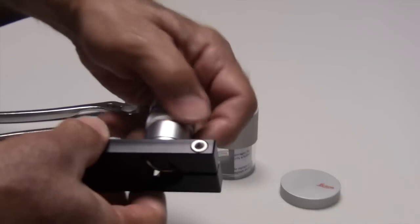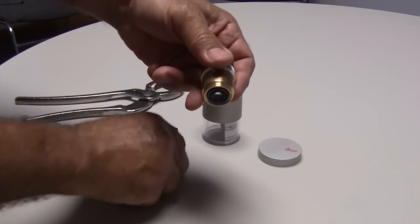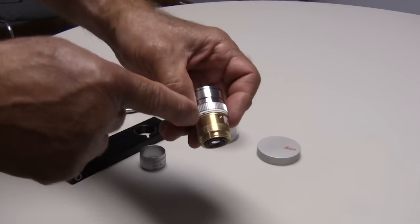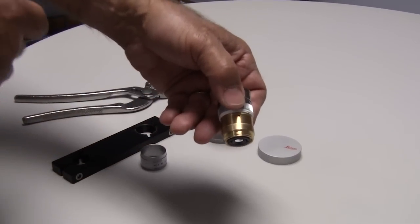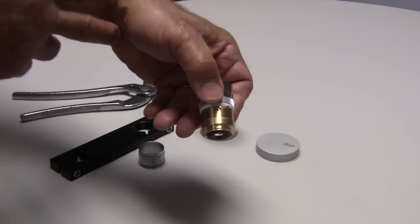Then we can unscrew the objective and remove the sleeve. Now we have direct exposure to the brass surface of the objective where we can transfer heat either into the objective or away from the objective.